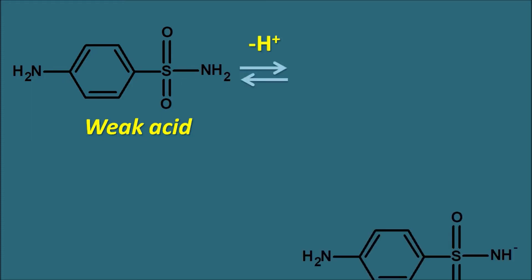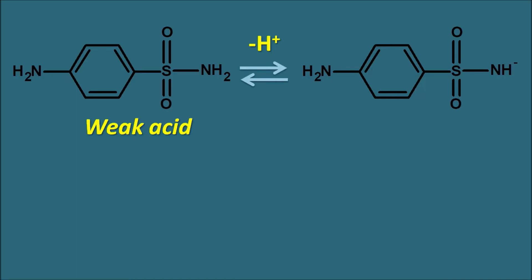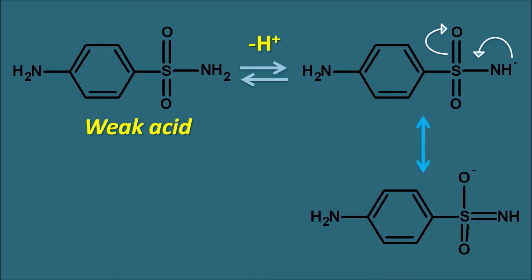When one proton is removed from the sulfonamide nitrogen it produces an ionized form, which is highly stable because the negatively charged nitrogen is attached to the sulfoxide groups, stabilized by resonance. The lone pair of electrons can shift such that the double bond moves to the oxygen, producing resonating structures. Because of this resonance stabilization, the nitrogen of the sulfonamide exists in ionized form at physiological pH. The sulfonamide is a weak acid with a pKa around 10, which can result in crystalluria — the formation of crystals in the urine.